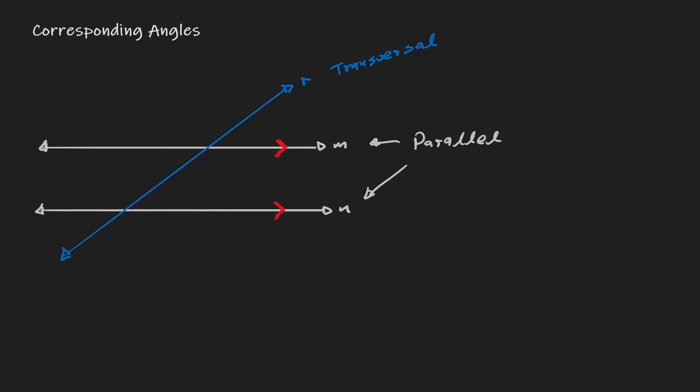Whenever we have this situation, we create new angles. Those angles are created within the intersection. So let's call this angle one, two, three, four, five, six, seven, and eight.